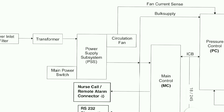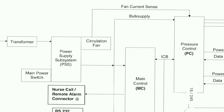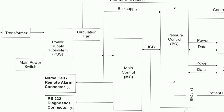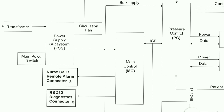The power supply gives output to fan current sense, to pressure control, and from the power supply it goes to the bulk system and main control — the MC. There are also nurse call and remote alarm connectors in the main controller, as well as an RS232 diagnostic connector.